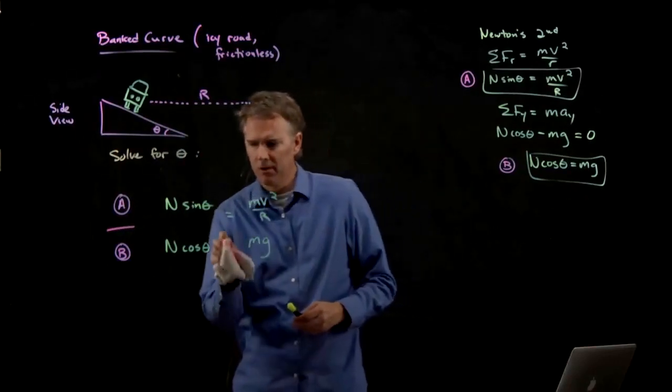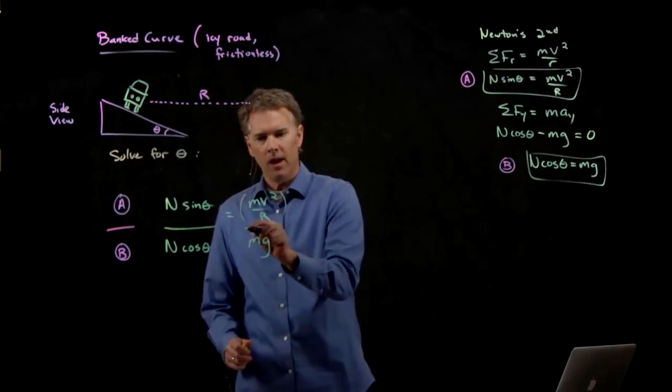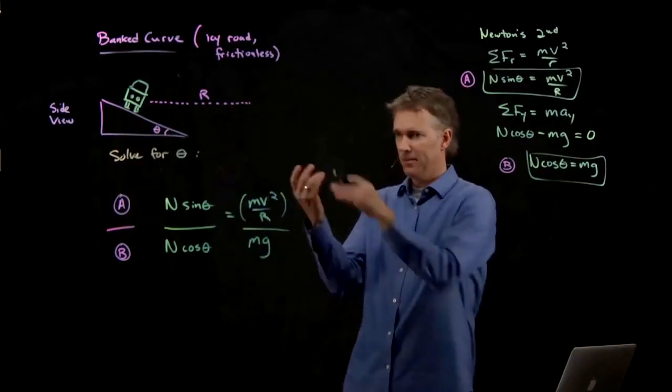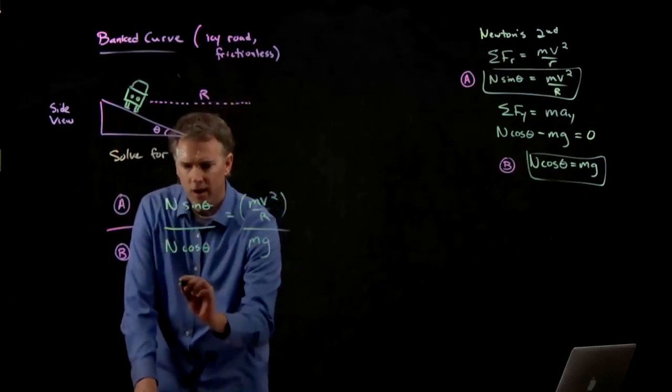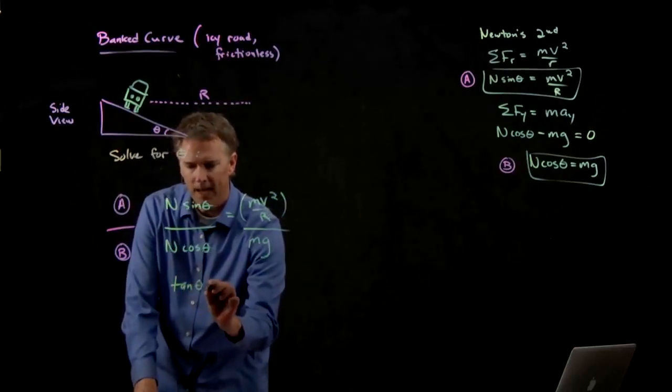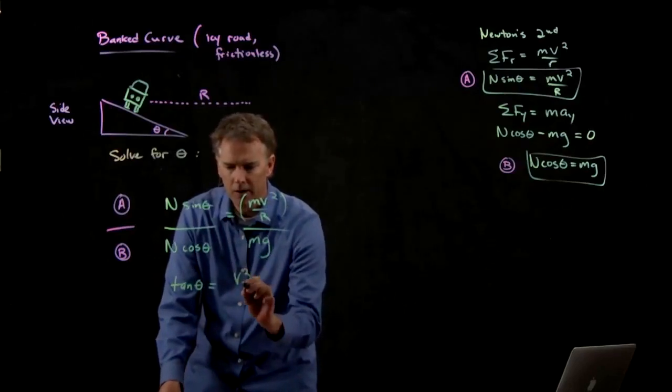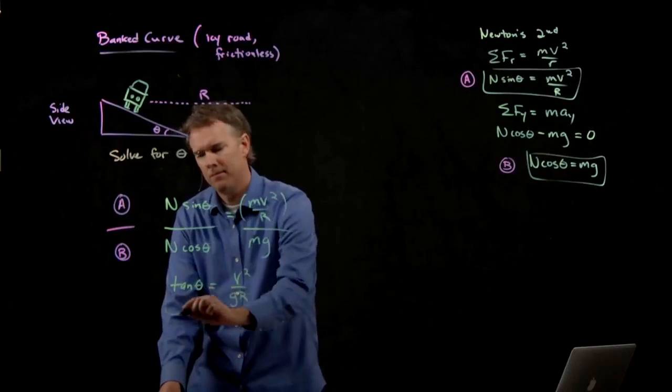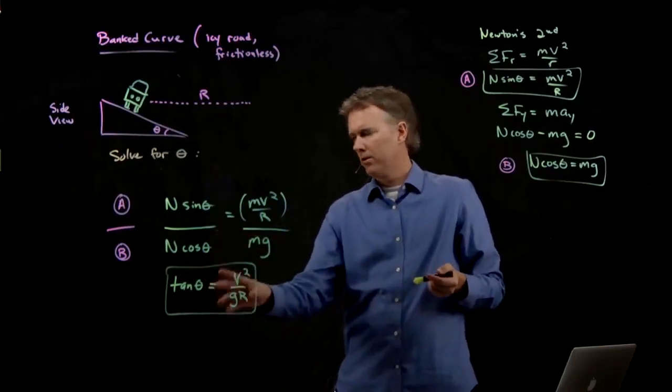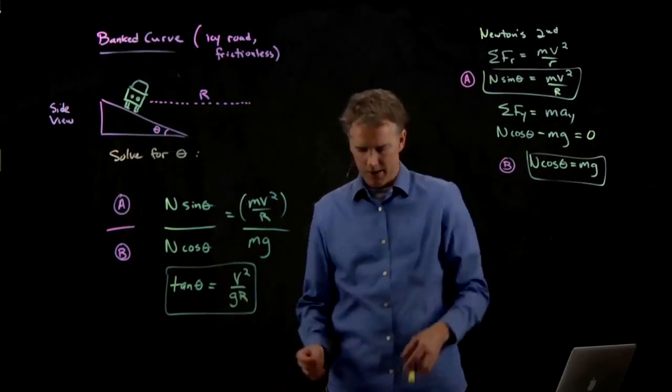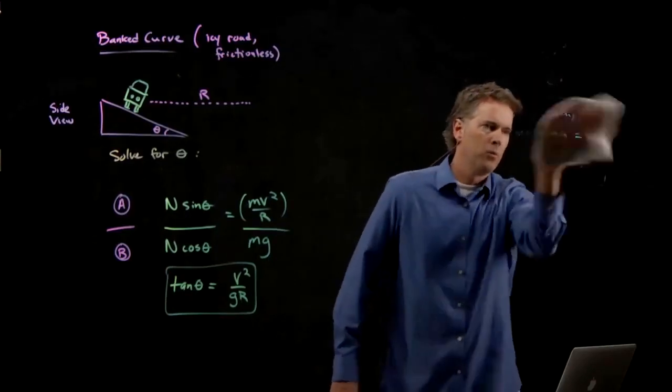And now here's the cool trick. If I have two equations, I can divide equation 1 by equation 2. And so the whole thing becomes n sine theta over n cosine theta equals mv squared over r divided by mg. Anytime you have two equations, you can always divide those equations. The reason you do that, of course, is n drops out. The whole left side just becomes tangent theta. M drops out over here, and we get v squared over g times r. So if you're trying to figure out what angle theta, you can use this equation. If you know this other stuff, you just take the arctangent and you're done.